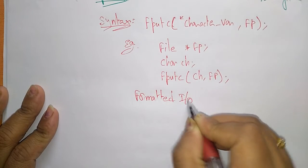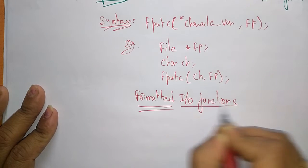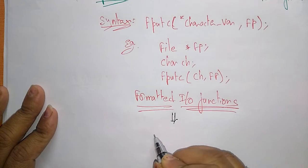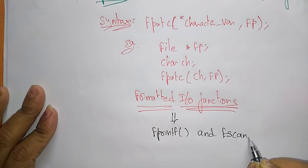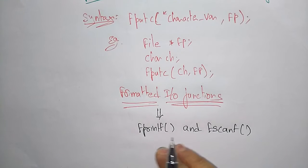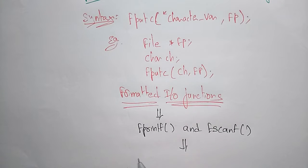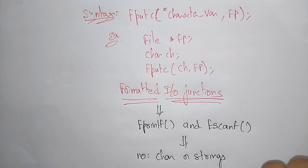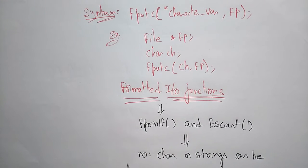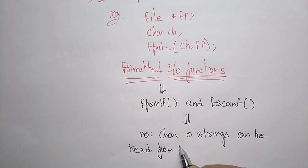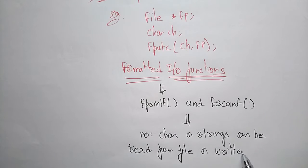The formatted I/O functions are nothing but fprintf and fscanf. These functions are used for numbers, characters, or strings — whatever the data type. They can be used to read from a file or write onto a file.